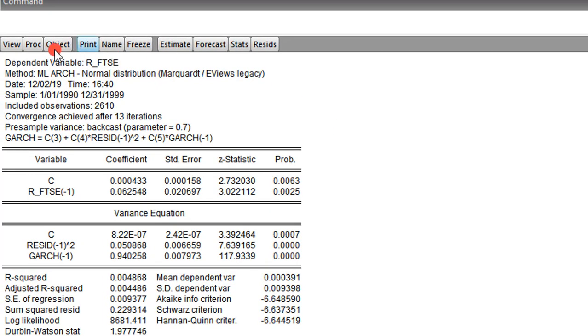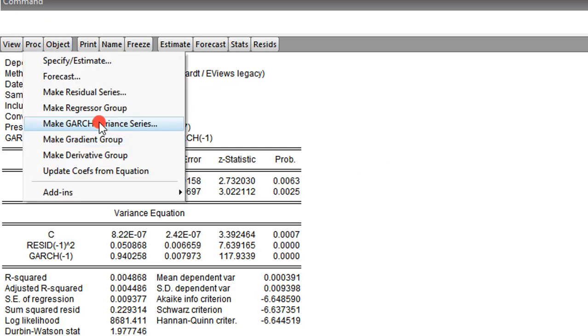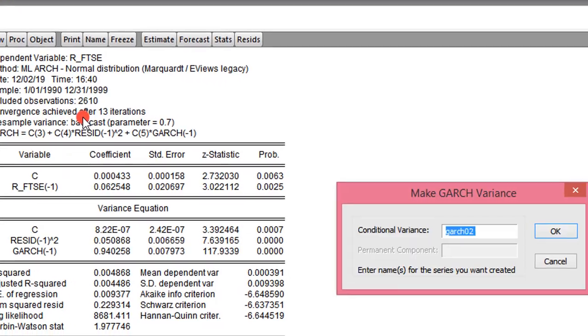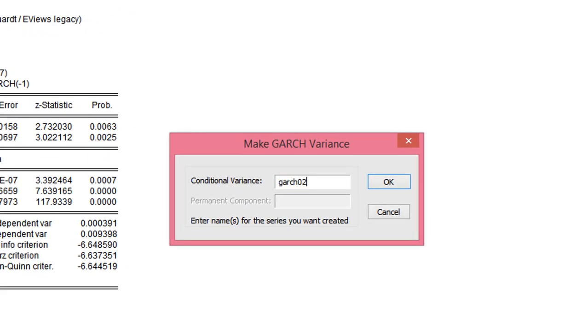Now back to eViews. Recall the earlier estimates for a GARCH(1,1) model as shown on the screen. So now I'm going to extract the variance series. I go to PROC, I click on Make GARCH Variance Series. I just called it GARCH Variance. I click OK.